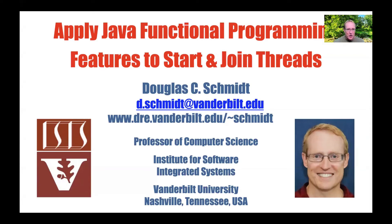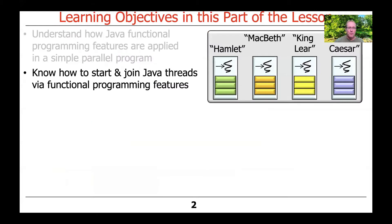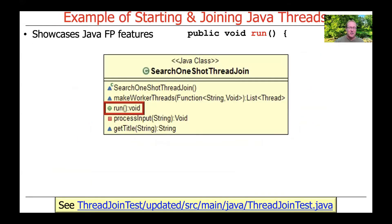Now that you have a basic idea of what the program is trying to accomplish, we're going to look at how we can apply Java's functional programming features to start and join threads in our program. This will also give us a chance to talk about threads. This particular example is going to focus primarily on its functional programming features, its FP features, but of course there's also object-oriented stuff going on as well.